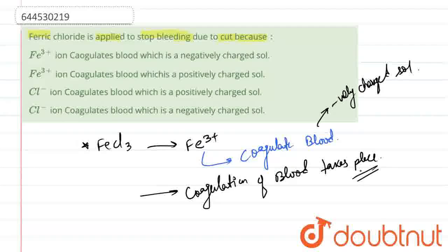Hence, the main reason is coagulation which stops bleeding. So we can say that Fe3+ coagulates blood which is a negatively charged salt.